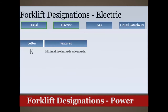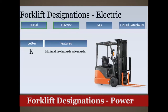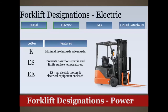E type electric forklifts have minimal fire hazard safeguards. ES type forklifts prevent hazardous sparks and limit surface temperatures. EE type forklifts have all electric motor and electrical equipment enclosed. EX types are designed for atmospheres with flammable vapors or dusts.